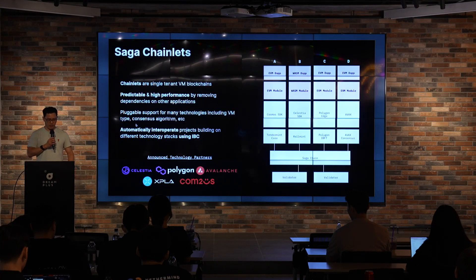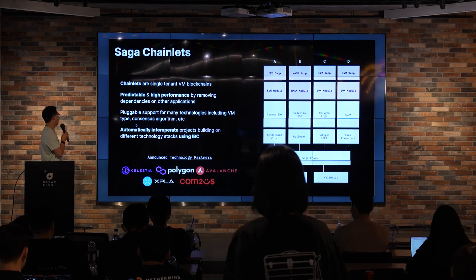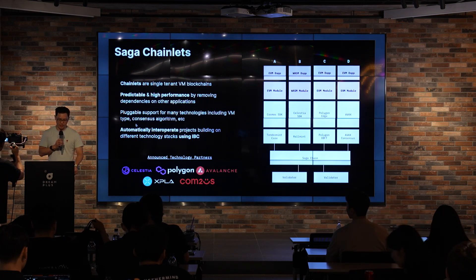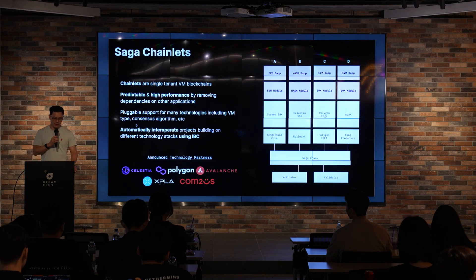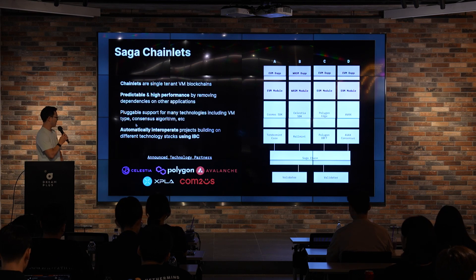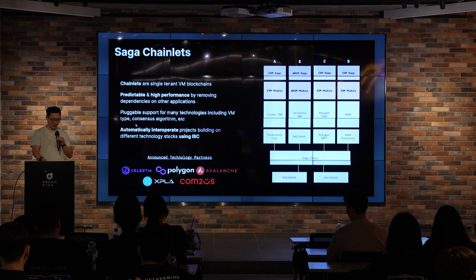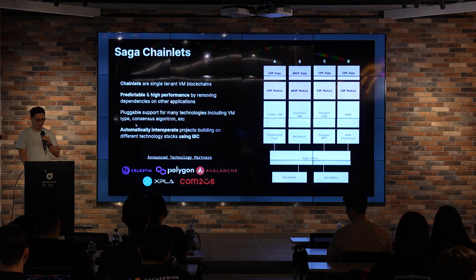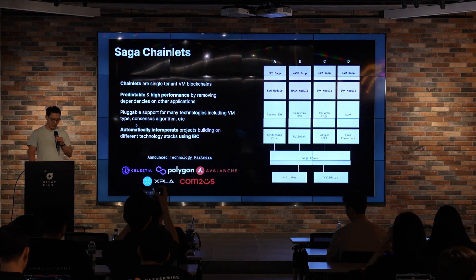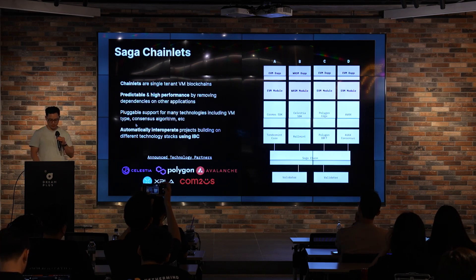Saga chainlets are deployed for developers as single-tenant VM blockchains — developers get their own space that's predictable, high performance, and not dependent on other applications. Because the only assumption about chainlets is IBC compatibility, we can launch many different types of technologies including different VMs and consensus algorithms that support IBC. We've announced partnerships with Celestia for rollups, Polygon for Supernets, Avalanche for Subnets, and Expla and others to help scale their chains.